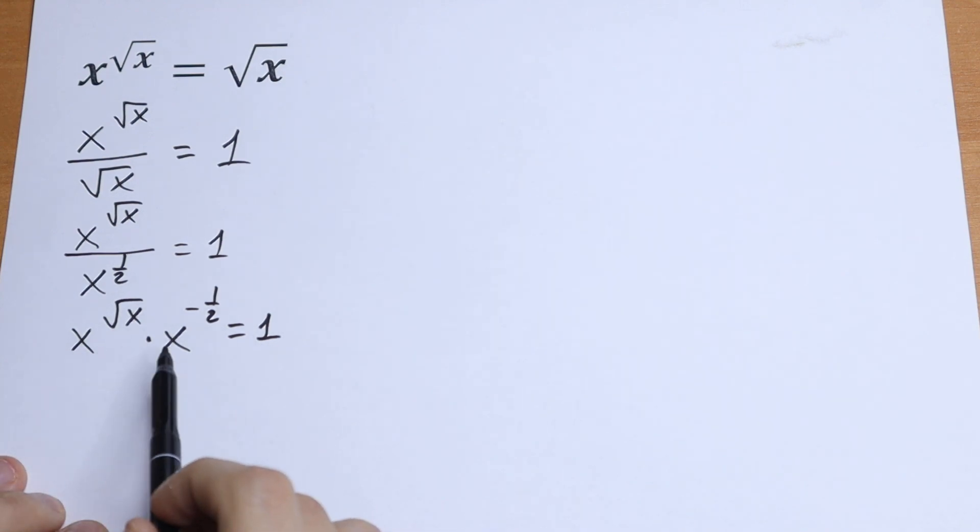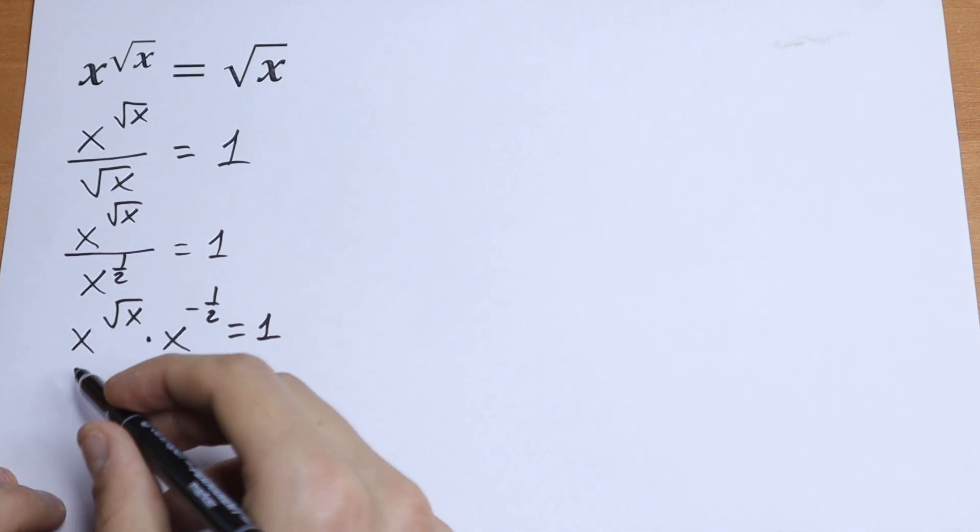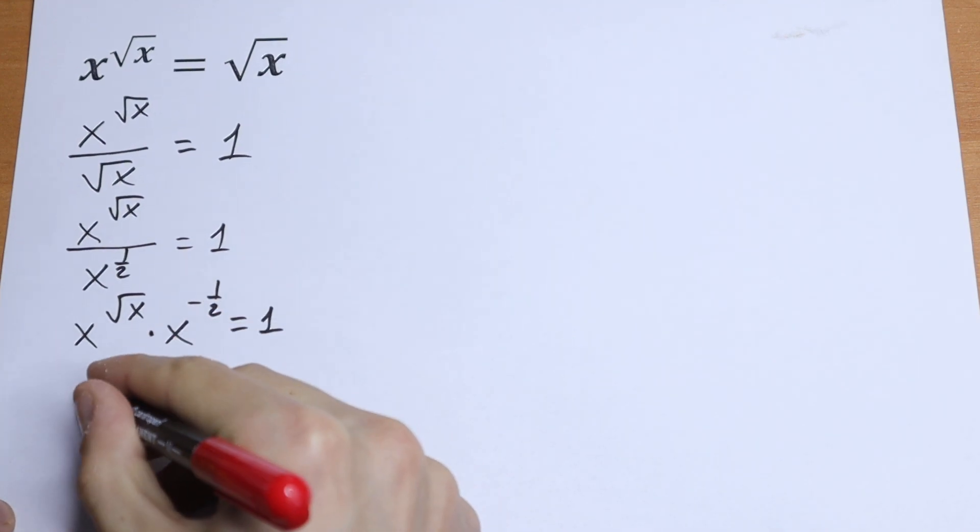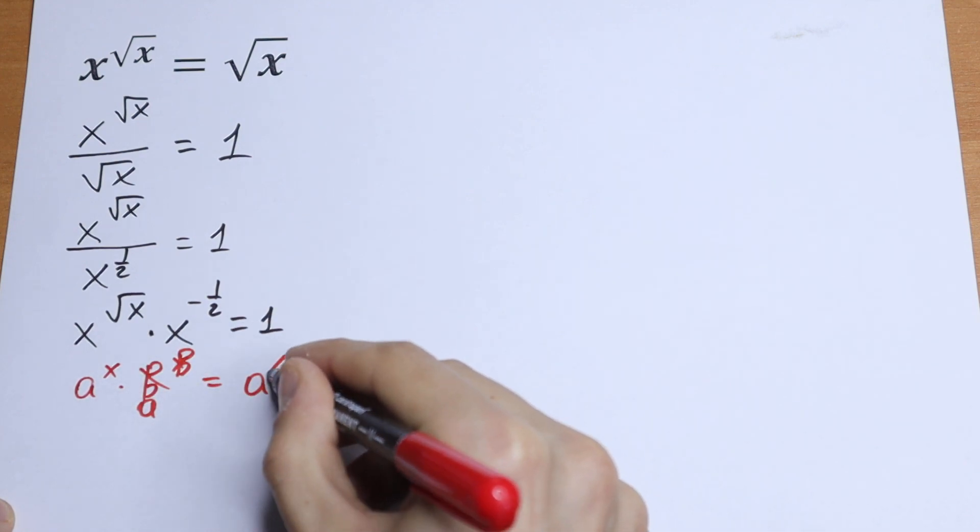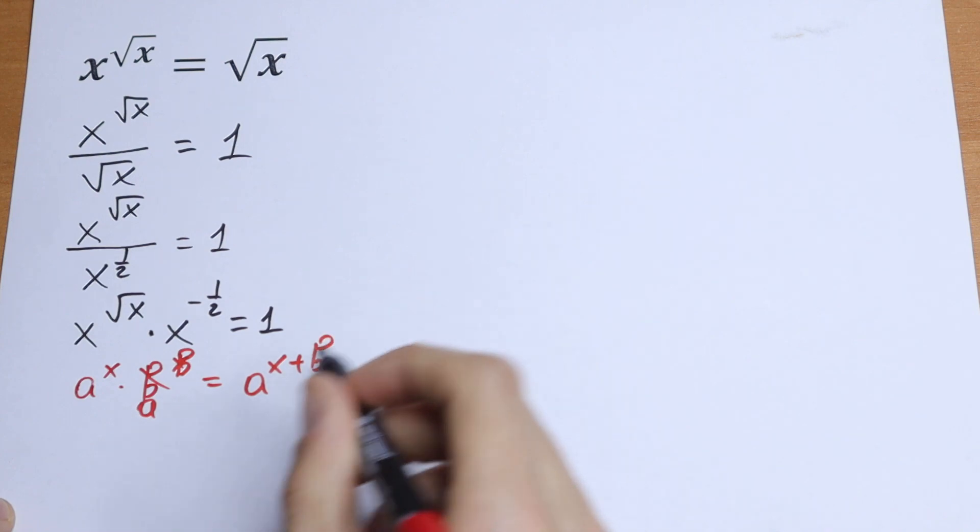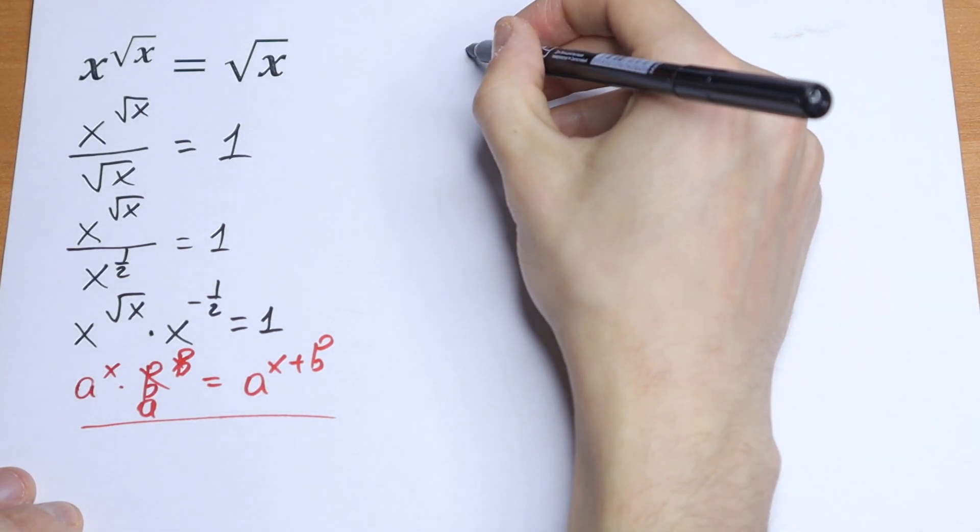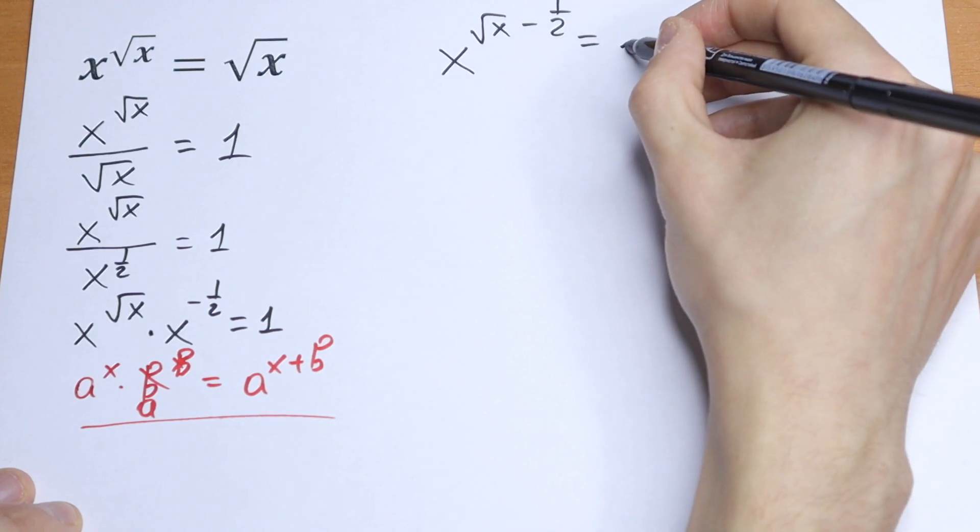If we have the same base but different exponents, and we're multiplying, we need to add our exponents. So we have the rule: a to the power x times a to the power b equals a to the power x plus b. So we just add our exponents, and we will have x to the power square root of x minus one-half equal to one.